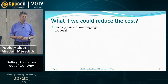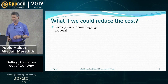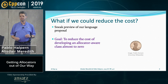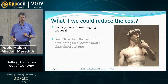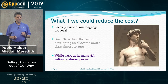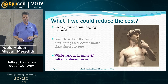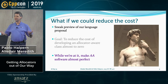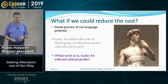So let's see if we can reduce the costs. In today's talk, we're going to give you a sneak preview of a language proposal that Alistair and I are working on, that'll reduce the costs almost to zero for developing a class that uses allocators. In the process, we hope to make all allocator-aware classes a little bit closer to perfect.